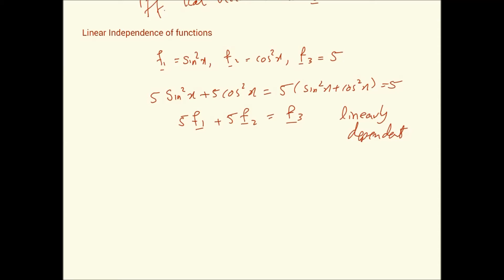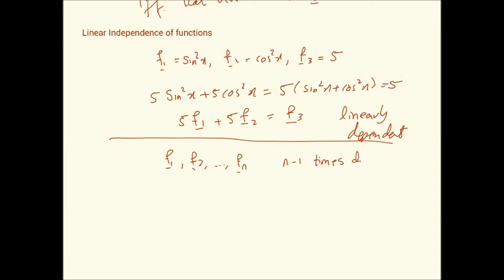How does one check for linear independence of functions more generally? There is a very nice way: if we have a set of functions f1, f2, ..., fn that are all n-1 times differentiable on the interval (-∞, +∞), we can do something very interesting. Taking the linear combination k1·f1 + k2·f2 + ... + kn·fn = 0, we end up with this equation.